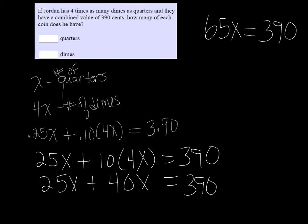Dividing by 65 on both sides we can solve for X. So 390 divided by 65 is 6. So we have 6 quarters. That means we have 24 dimes, because it's 4 times as many.